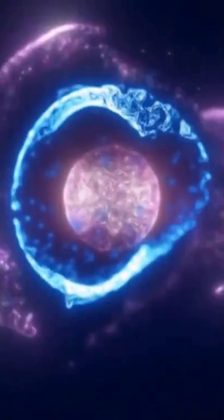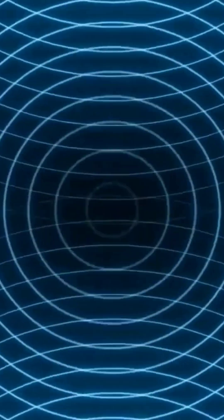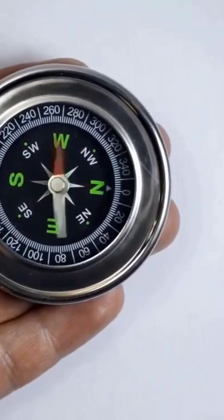For many years, people believed that electricity and magnetism were different phenomena. Lightning in the sky and electricity in wires had no relation to the compass that guides ships.